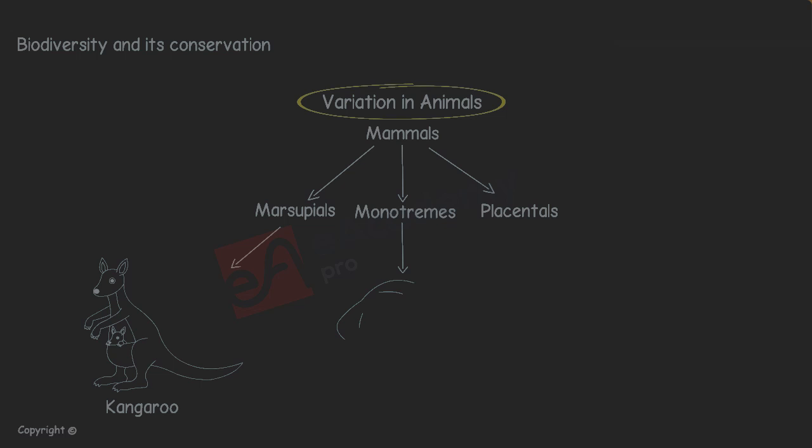Monotremes lay eggs but suckle their young. Example, Platypus.